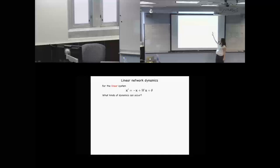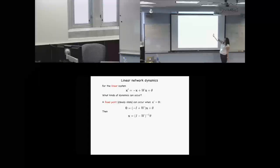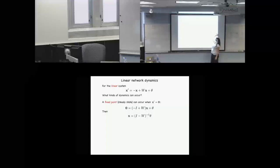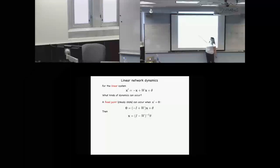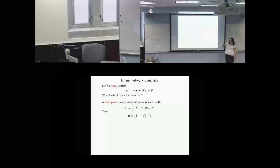With a linear system like this, what kinds of dynamics could we get? One thing we could do is solve for the fixed point — when that derivative is zero, so we're at a steady state, and we can solve for the value of X. Assuming that I minus W is invertible, we get a single value for this fixed point. There is one fixed point and only one fixed point.